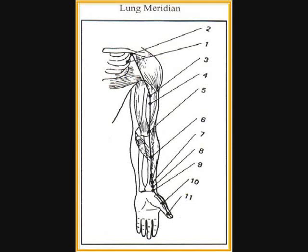Lung nine indications: cough, asthma, spitting of blood, sore throat, palpitations, pain in the chest, wrist and arm. Lung ten indications: cough, spitting of blood, sore throat, loss of voice, fever, feverish sensation of the palm.